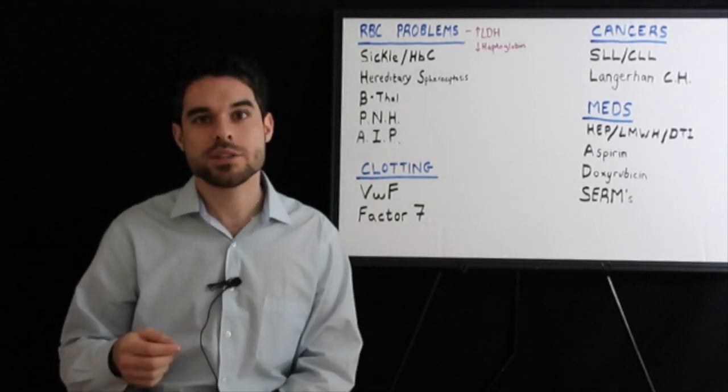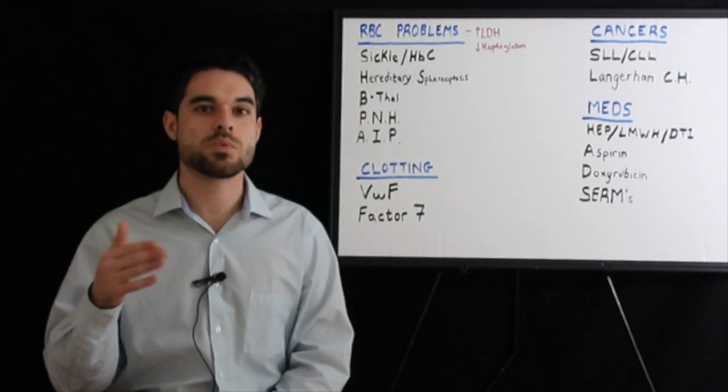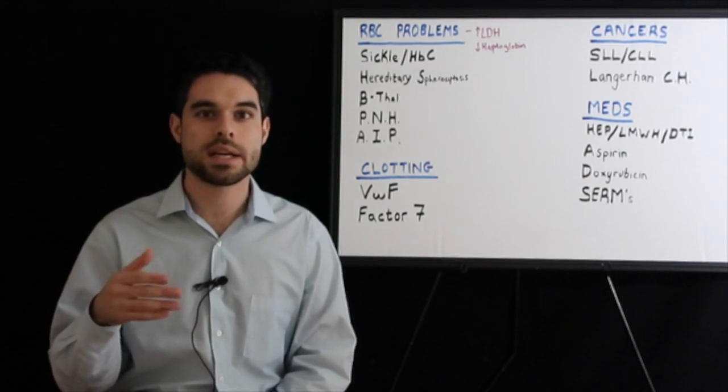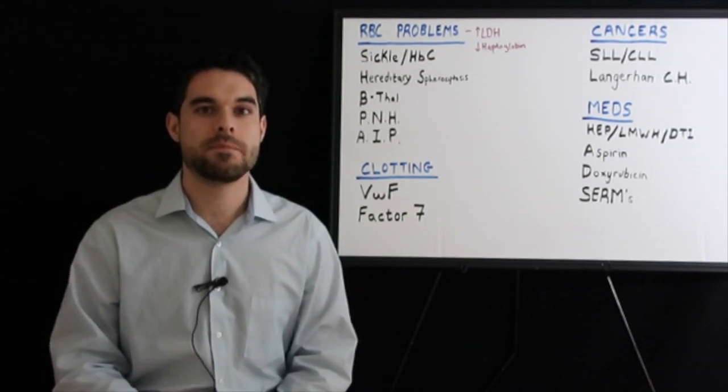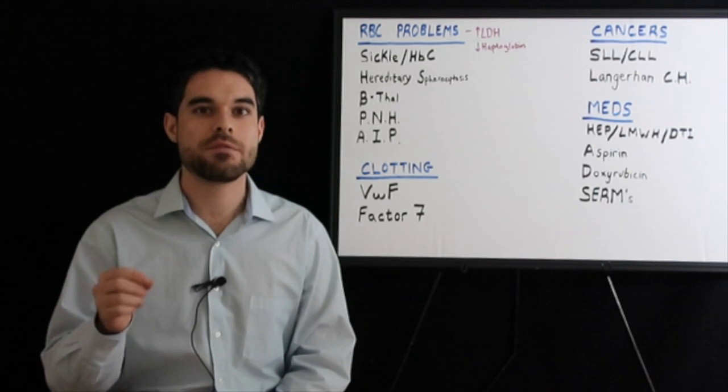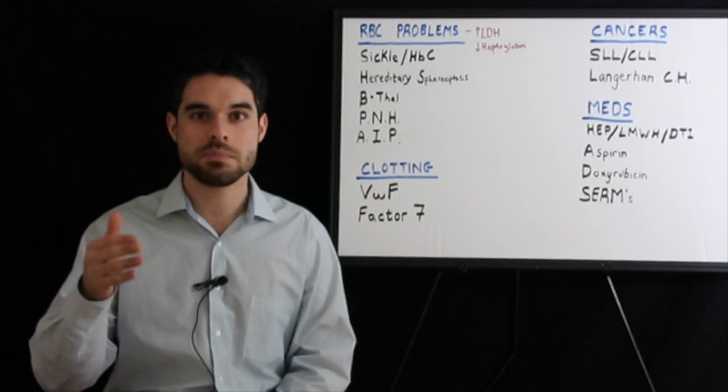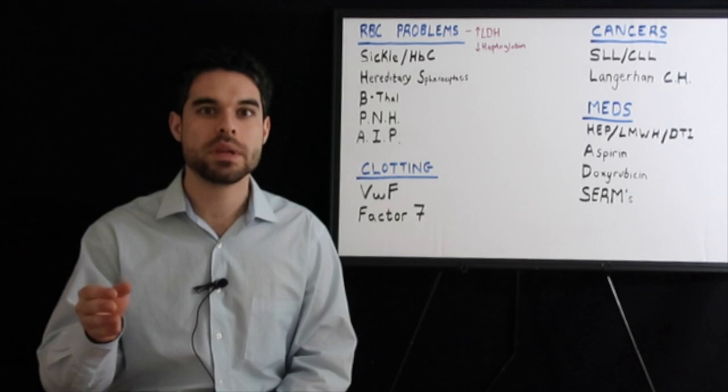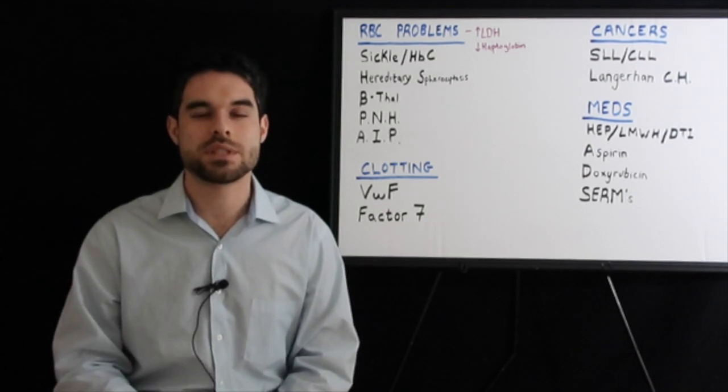Factor VII is quite interesting in that it's the first one to go away if you have cirrhosis—it has the shortest half-life. Also, if you give a vitamin K infusion and someone has an increased PT, if the vitamin K infusion does not help, that actually indicates a factor VII deficiency.